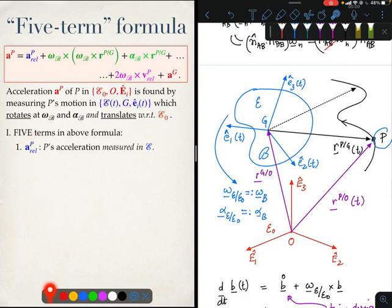The first term, a_P_rel, is the acceleration of the point P as measured in the coordinate system E, which is the BFCS as I have said of this rigid body.